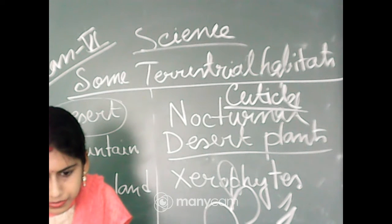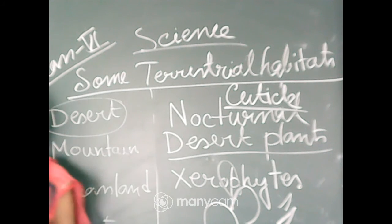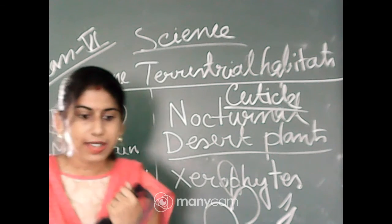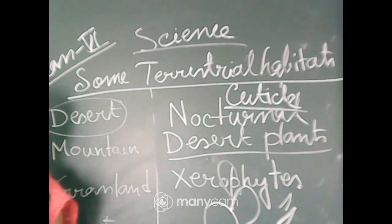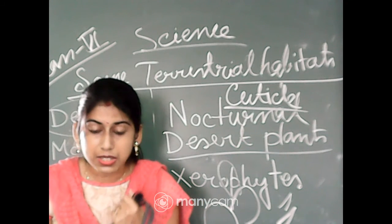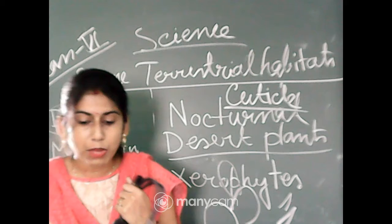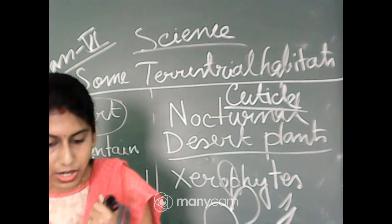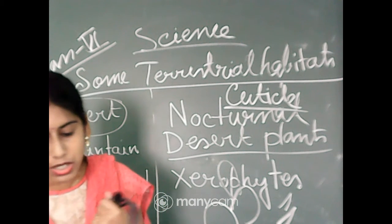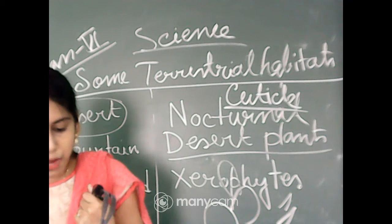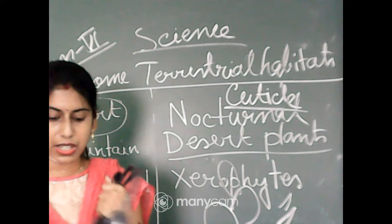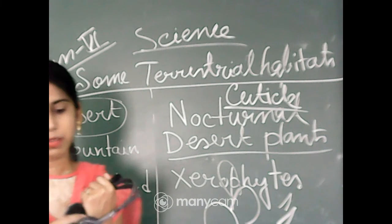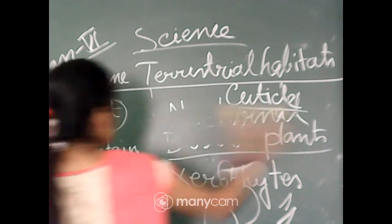Another feature of desert plants is their stomata. Through the stomata present on the leaves, transpiration takes place. In desert plants, the stomata opening is on the inner side — this is called sunken stomata — which helps reduce the rate of transpiration. Additionally, the thick cuticle found on the stem and leaves prevents the loss of water.